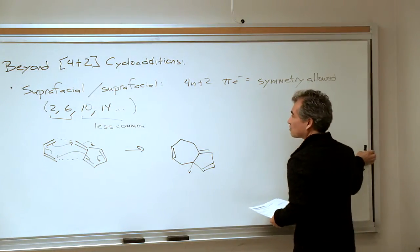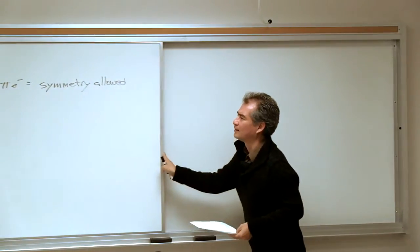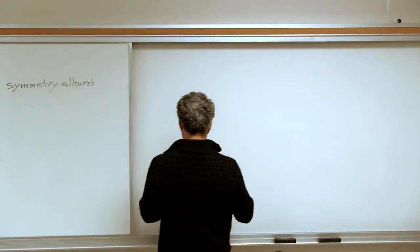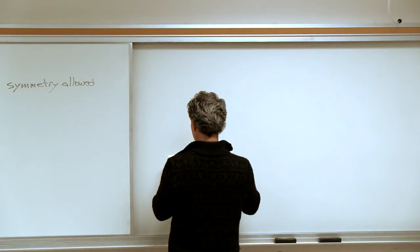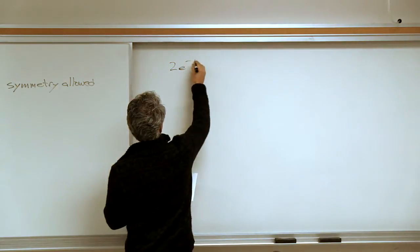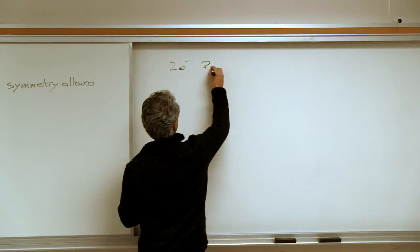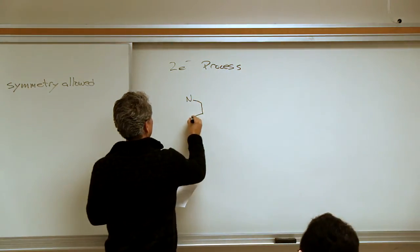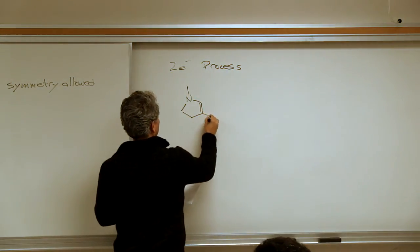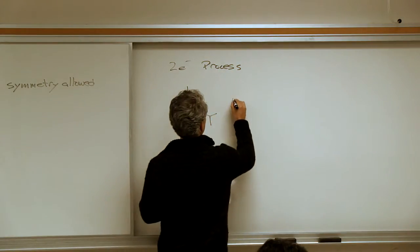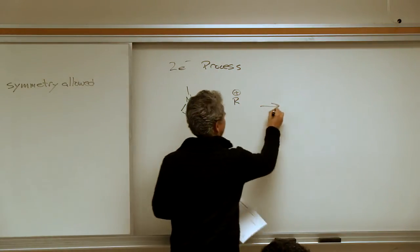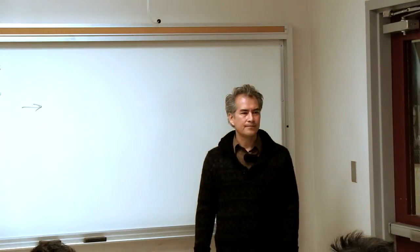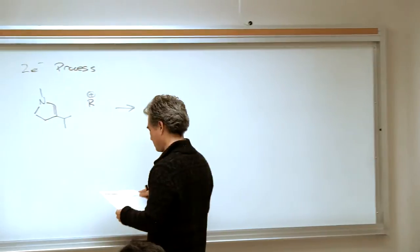Two-electron processes and six-electron processes are common. It may not be obvious — what's this two-electron thing? You've seen these a lot, you just don't know it. Let's take an example of a two-electron process, starting with a simple question: let's imagine taking a carbocation and reacting it with an enamine, and think about the different pathways this could follow.